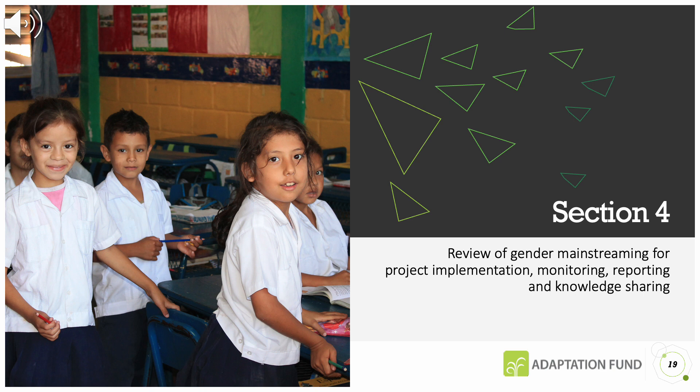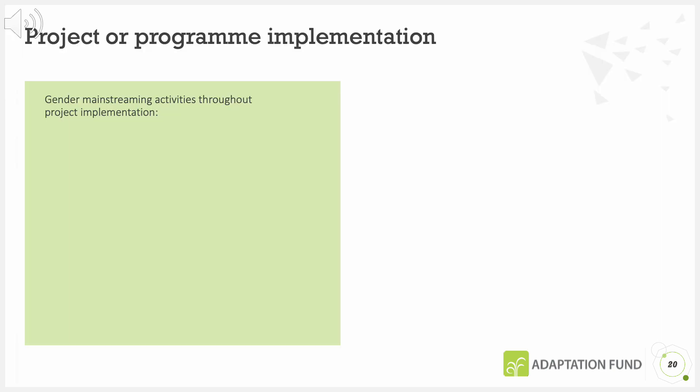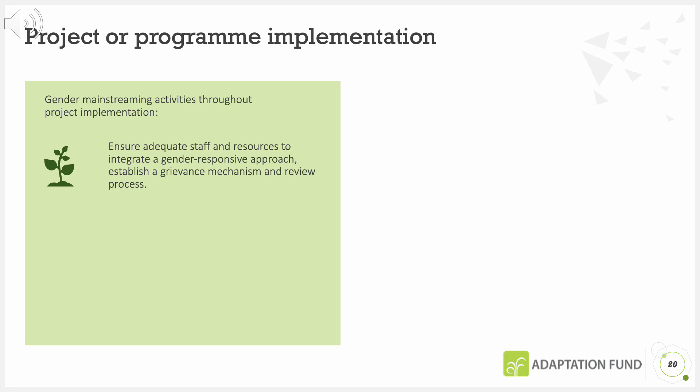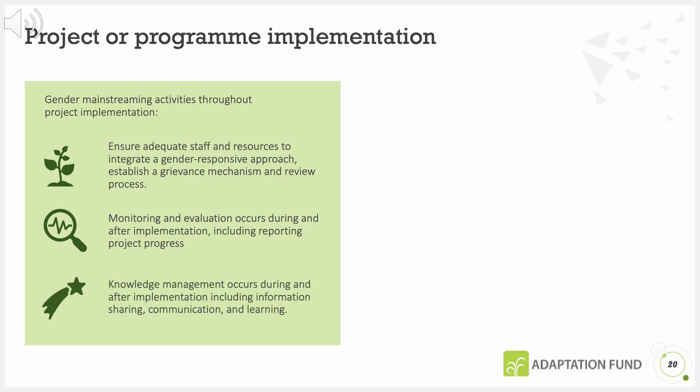Let's review our learning from Module 3. When implementing an Adaptation Fund project or program: before implementation, the project or program needs to ensure adequate staff and resources to integrate a gender-responsive approach, establish a grievance mechanism, and review process. Monitoring and evaluation occurs during and after implementation, including reporting project progress. Knowledge management occurs during and after implementation, including information sharing and learning.